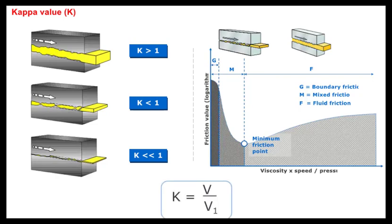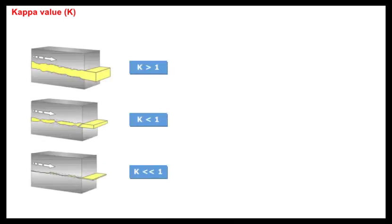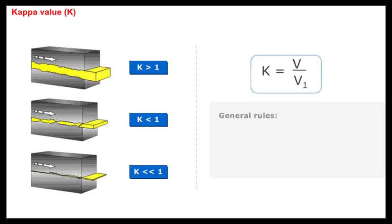The ratio between the actual viscosity, or V, and the required viscosity, V1, is known as the kappa value.